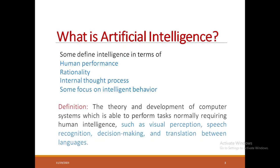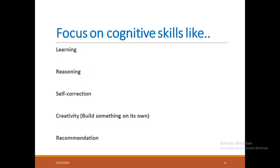Artificial intelligence is a branch of computer science — a theory and development of computer systems which are able to perform tasks normally requiring human intelligence, such as seeing and understanding, hearing and understanding, decision making, and translating languages.